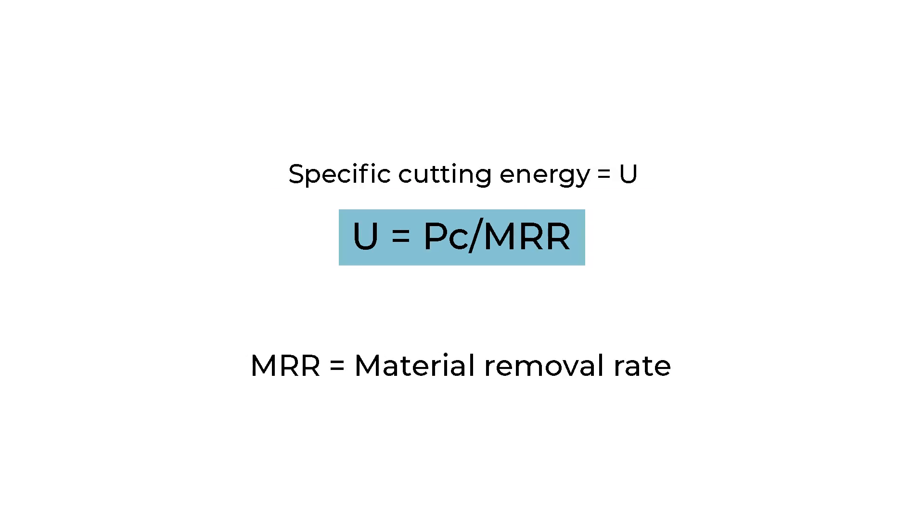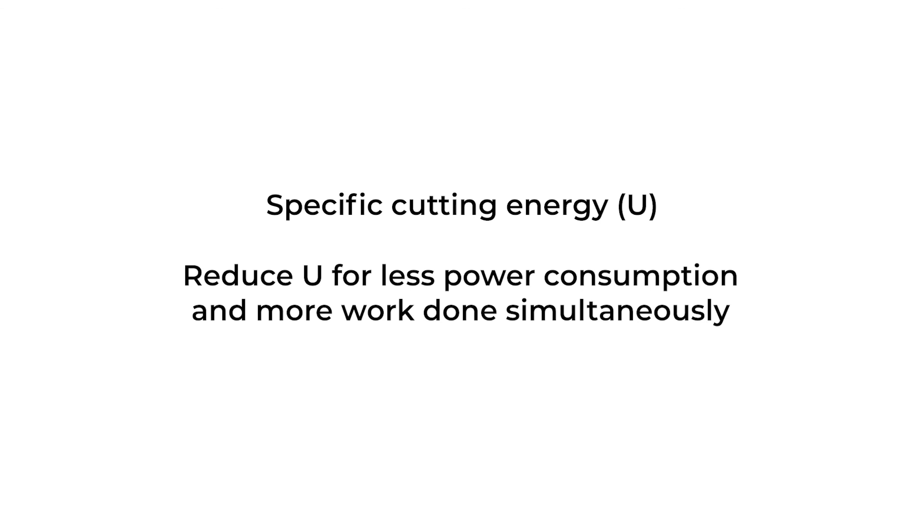Specific cutting energy is denoted by capital U and it is equal to Pc by material removal rate. Now we determine specific cutting energy. If we can reduce this parameter, then overall energy spent will be less for more work done.